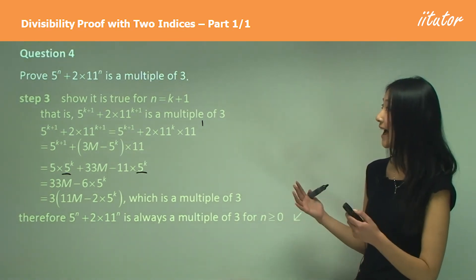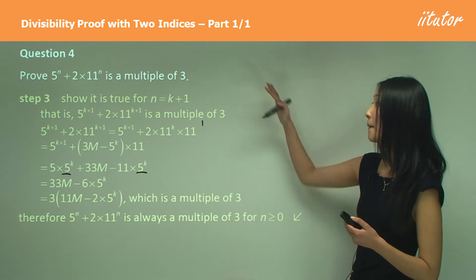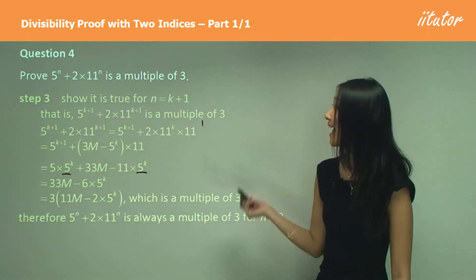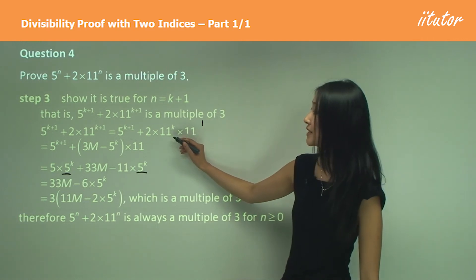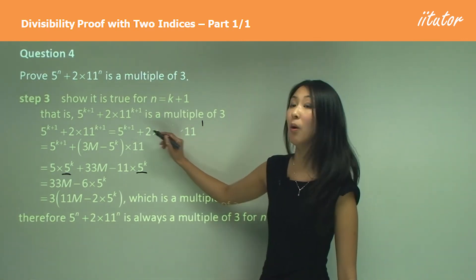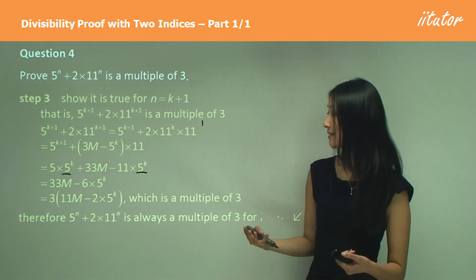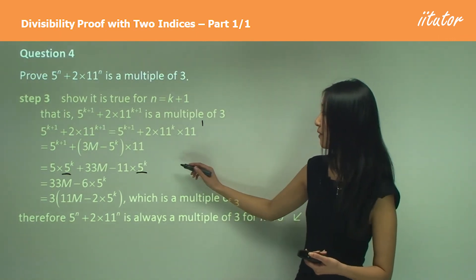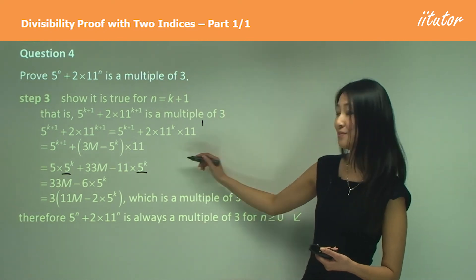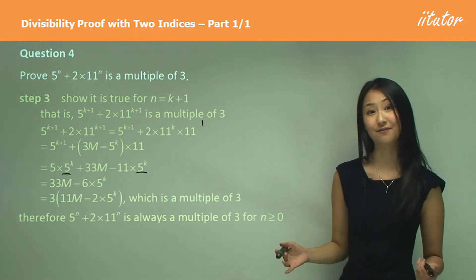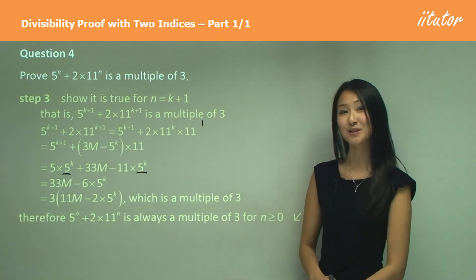An important fact with using multiples with two numbers that both have indices: over here we want to eliminate either the 11^k or the 5^k, so just choose one and stick to that. Remember to always keep an eye on what we're trying to do, which is factorize out the 3, which is why we knew we had to separate the 5^(k+1).